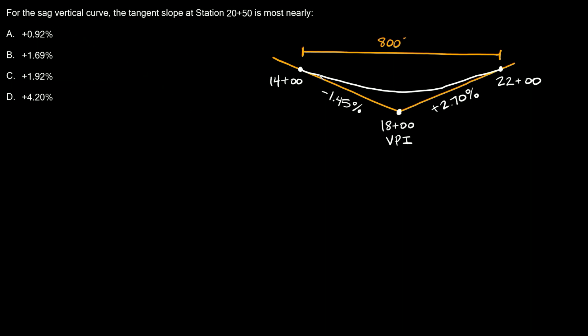This one says for the SAG vertical curve, the tangent slope at station 2050 is most nearly, and then it gives us these four options.